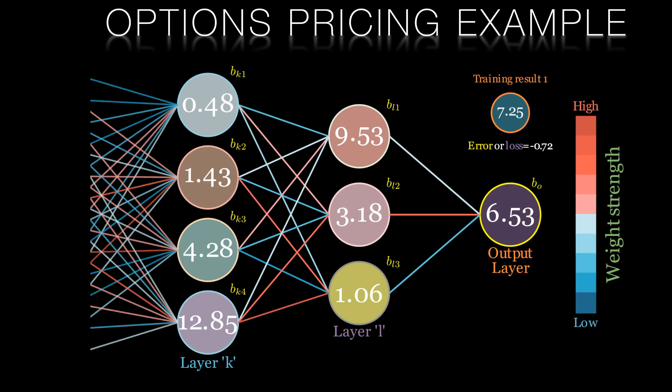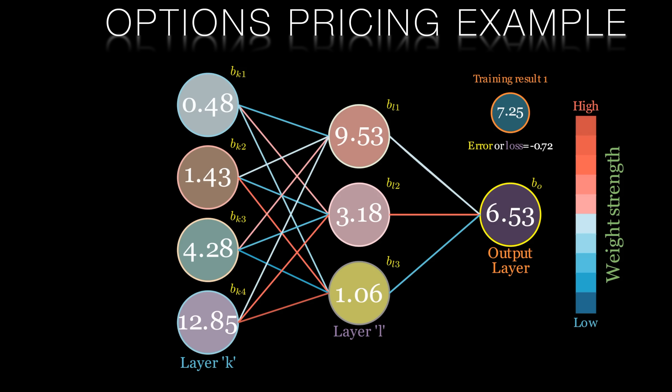Not all nudges are created equal. Look at a weight connected to a neuron with a high activation — even small changes to this weight will have a big impact on the output neuron's activation. By contrast, a weight connected to a neuron with a very low activation means even large changes in that weight will not have much effect on the output. Additionally, a weight with very high strength means that even small changes to the activation of that neuron in layer L will have a large impact on the output activation.